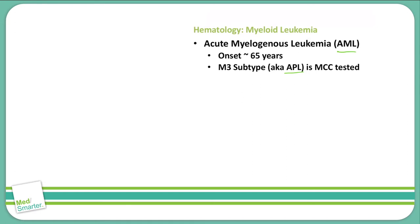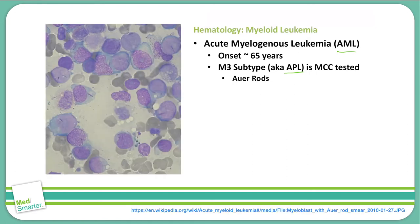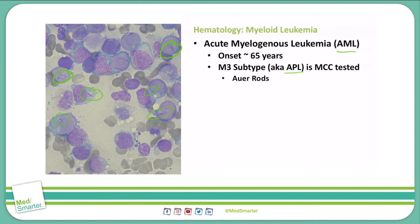In AML, you see Auer rods. As you can see in the photo here on the left, these Auer rods look like needles or splinters throughout each leukemia cell, and you'll see several of them in this picture. Those Auer rods can actually cause DIC — they can be released from the cell and cause DIC within the body of an individual that has AML.